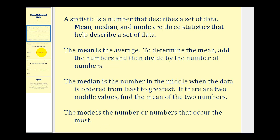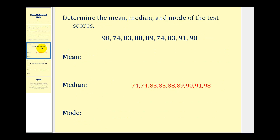Let's look at an example. We have a set of test scores and we want to find the mean, median, and mode. To find the mean, we have to add all of these numbers up — find their sum — and then divide by the number of numbers.